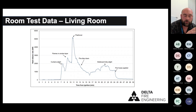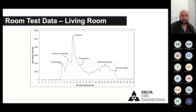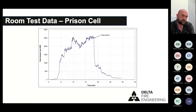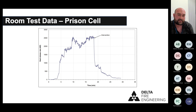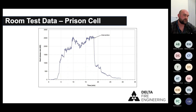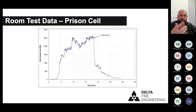For example, looking at living room test data: flashover occurred at around 5 megawatts (5,000 kW), with rapid growth from near zero to 5 MW in four to five minutes. A prison cell comparison peaked at around 2.5 MW — half that of the living room — with a slightly slower growth rate but igniting a bit quicker. By comparing these different fuels, we can draw correlations and think about the risks when developing design fires for a given scenario.